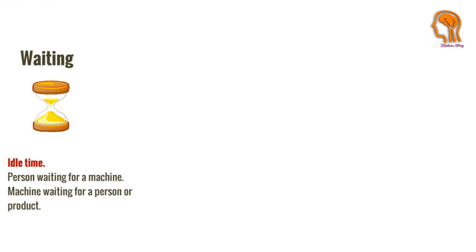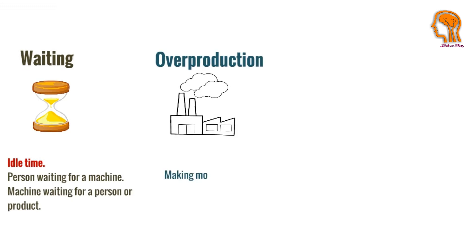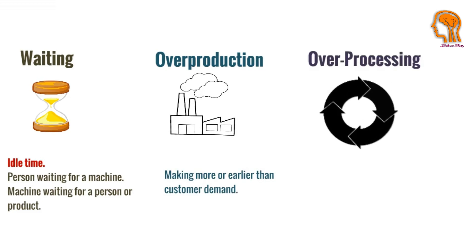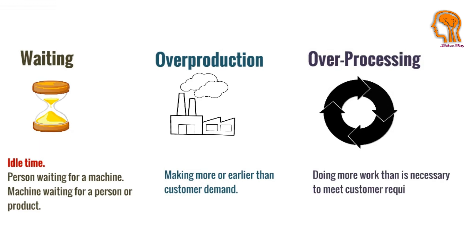Waste number 5 is Overproduction — making more or earlier than customer demand. This is considered the worst type of waste. Waste number 6 is Overprocessing — doing more work than is necessary to meet the customer's requirements.